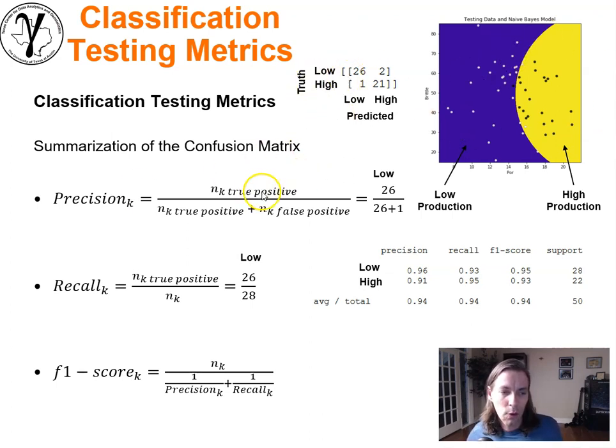You have a precision for each k. For the low category in this example, the true positives for low are 26 times that we said it's low and it was low. The false positives are times that we said it was low but it wasn't low—we did that once. So this ratio right here, if you go ahead and check, that's actually equal to 96%, and that's the output directly from using scikit-learn metrics to calculate it for this problem.